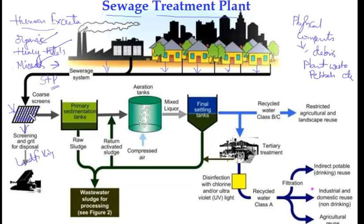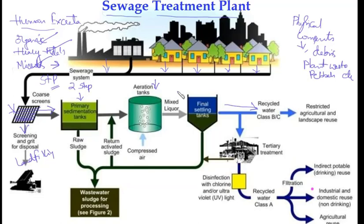The water which passes through these coarse screens is collected into sedimentation tanks where it is treated. Sewage treatment consists of two steps: step one is called primary treatment, and step two is called secondary treatment. After the completion of secondary treatment, the treated water can be discharged into large water bodies or used for restricted agricultural purposes.